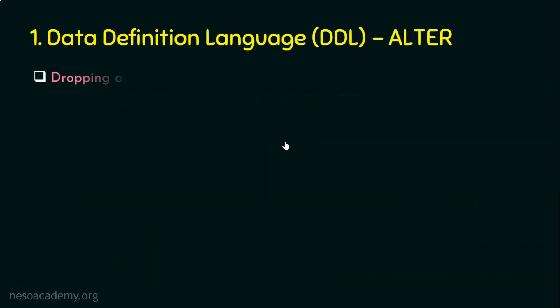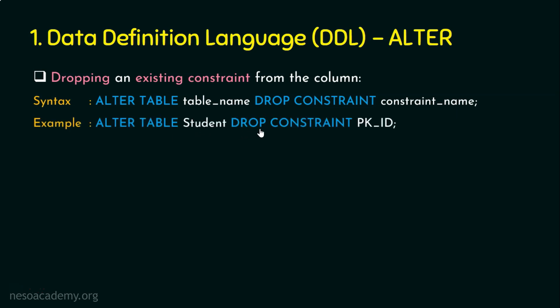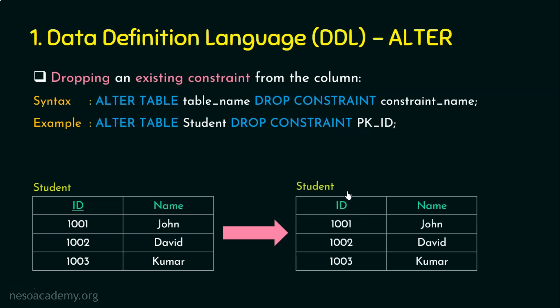Now let's see how to drop an existing constraint. The syntax is: ALTER TABLE table_name DROP CONSTRAINT constraint_name. For example: ALTER TABLE student DROP CONSTRAINT pk_id. This is why we provide a constraint name — so we can reference it when dropping. The constraint name pk_id is linked to the id column. After executing this command, the primary key constraint is removed from the column.